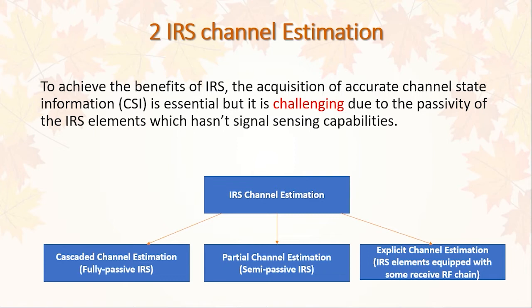Recently, there are three methods for IRS channel estimation. The first method is cascaded channel estimation, also called fully passive IRS, because all IRS elements are passive. Cascaded means user-to-IRS channel and IRS-to-base-station channel. The second method is partial channel estimation, where the IRS surface is equipped with some active elements for channel estimation — also called semi-passive IRS. The third method is explicit channel estimation, where IRS elements are equipped with some received radio frequency RF chains for channel estimation.